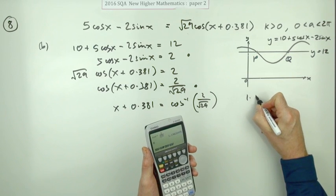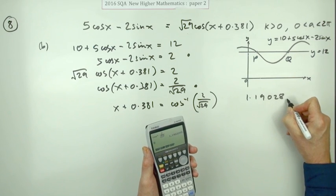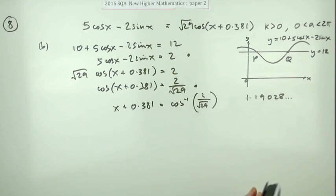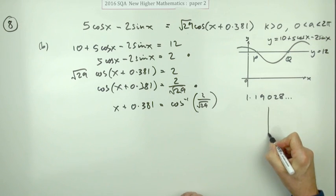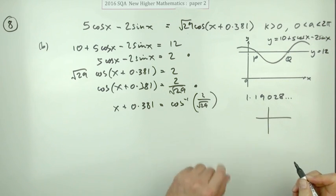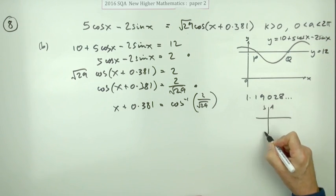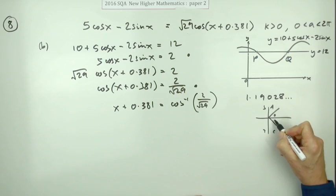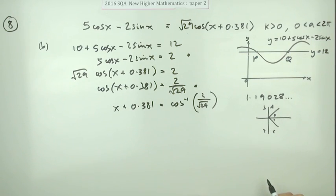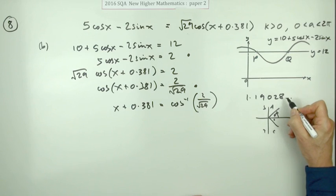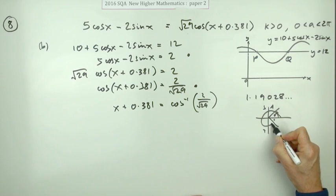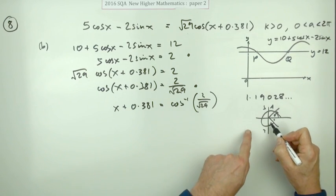Next line is going to be inverse cos, so it'll be the inverse cos of 2 over root 29. Putting that in gives you 1.19028 and so on. But what are the two angles where the cosine is positive? All sine, tan, cos means it's either in the first quadrant or it's in the fourth quadrant.